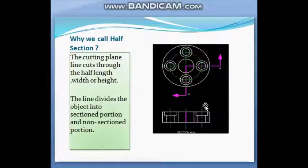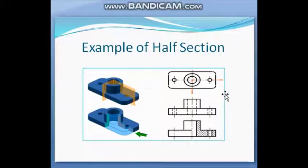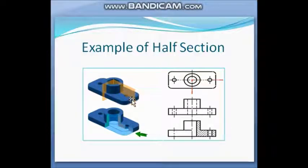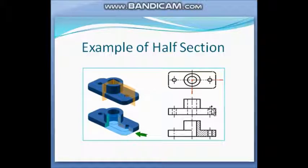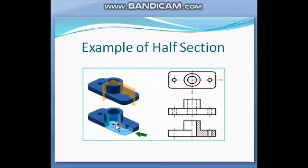There is another example of half section. This is the total object, and there are two planes. One fourth of the object has been removed and three-fourths remain. Before section, this is the front view with dashed lines throughout. After removing the one-fourth part, we get this half sectional view, and the hatch line is drawn on only half of the object.